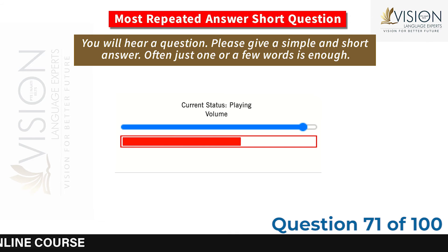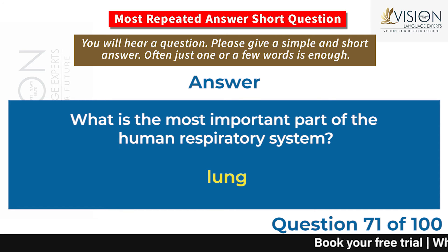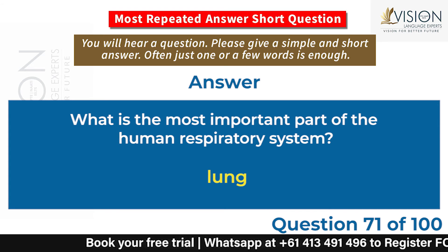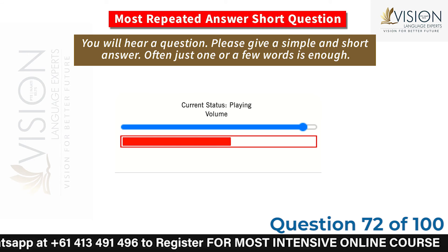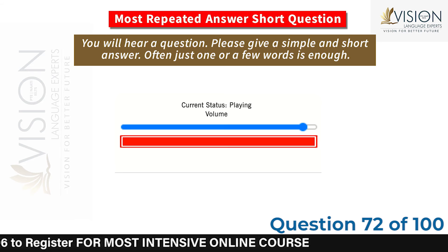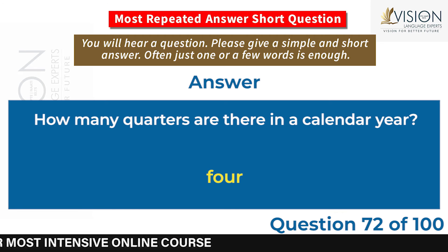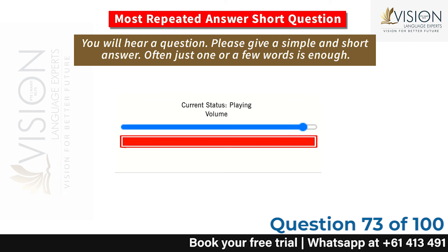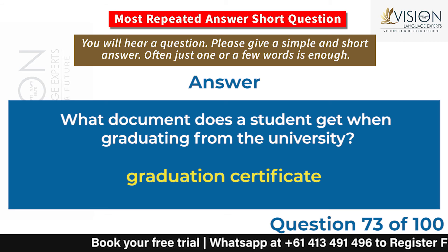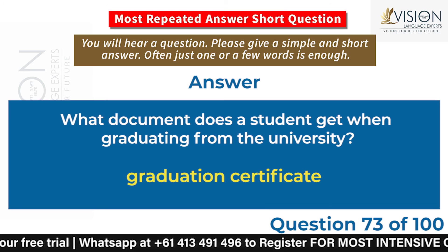What is the most important part of the human respiratory system? Lung. How many quarters are there in a calendar year? Four. What document does a student get when graduating from university? Graduation certificate.